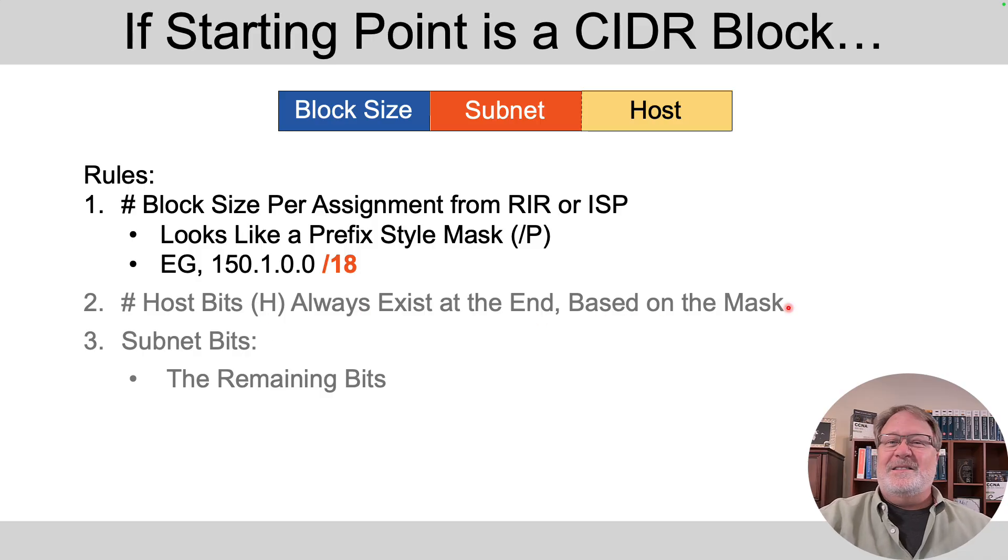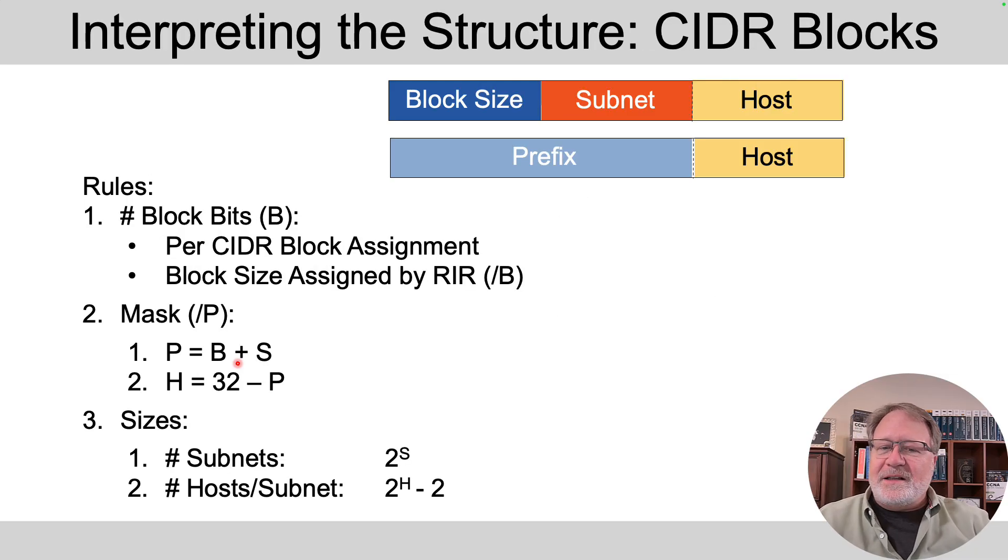Then for the number of host bits, it's always at the end. It's the number of zeros in the mask. Then the subnet bits are still what's between the block bits on the left and the host bits on the right, as usual.